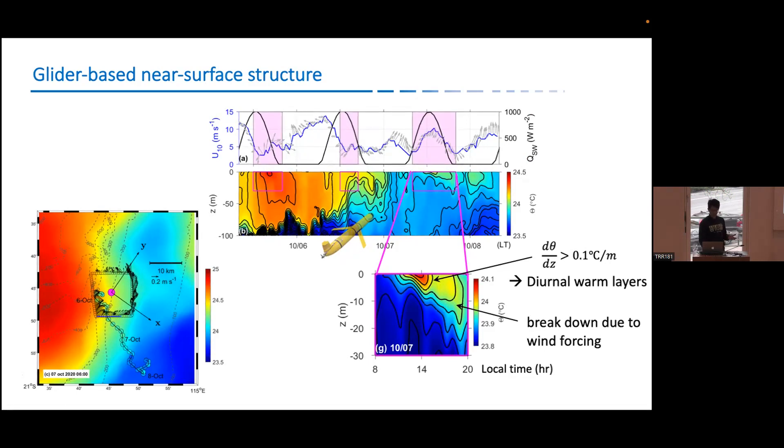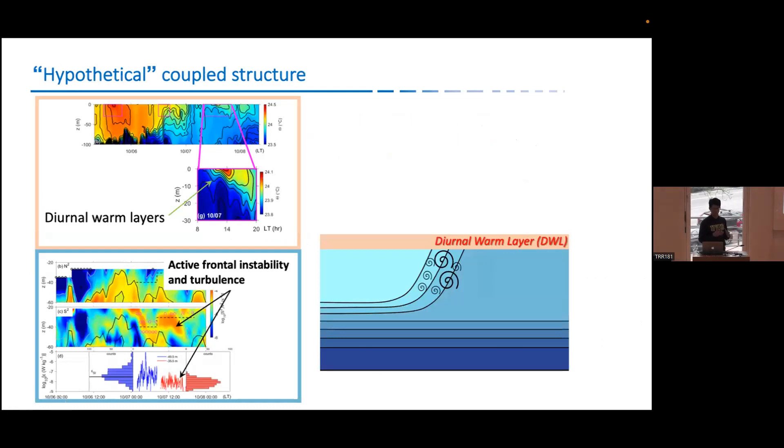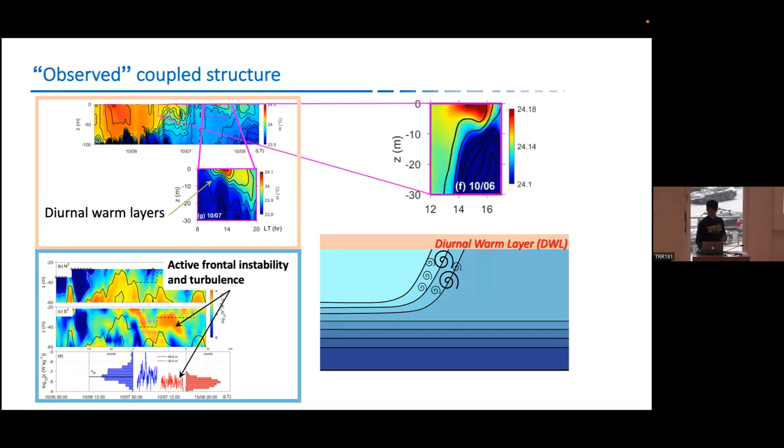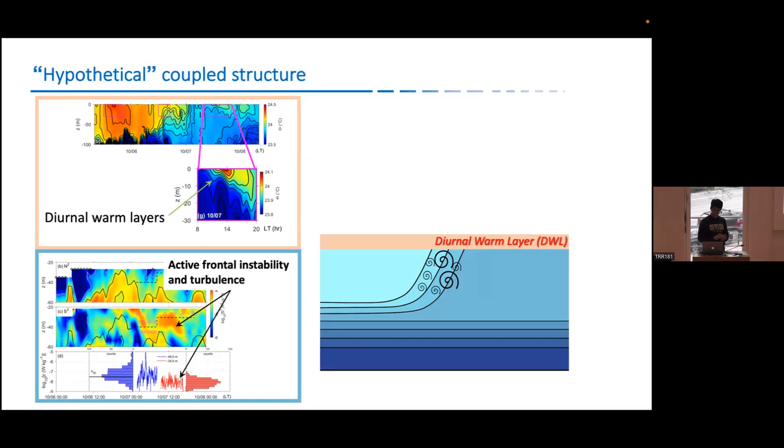And with that, we can think about maybe this diurnal warm layer captured in this location also exists in this location where we have active frontal dynamics and turbulence. With that, we propose a hypothetical coupled structure where we have upper diurnal warm layer and the lower frontal structure as shown here. What is going to happen is that once we have this structure, the surface forcing can now penetrate into deeper layer of the surface mixed layer. Which means it's blocked out from the surface and that's why the frontal dynamics will sustain in the deeper layer. This is hypothesis.